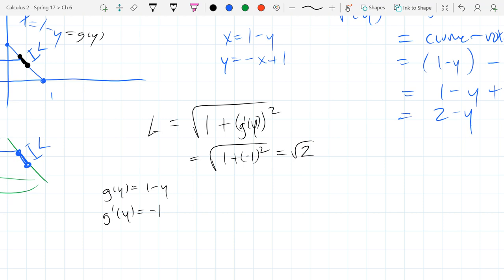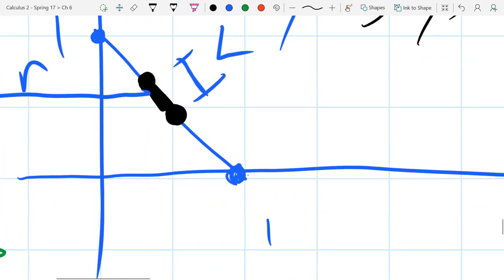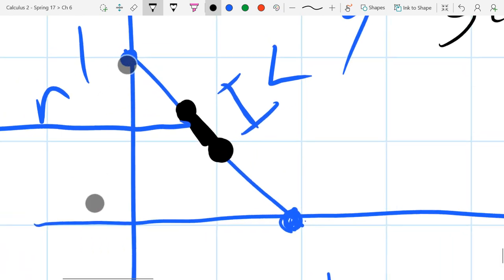Why does it make sense for this length to be a constant? Does it matter where I am up here for how big that length is? It should be the same angle the whole time, so it should be the same length the whole time. Now where does that square root 2 come from geometrically?